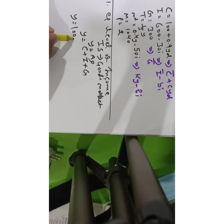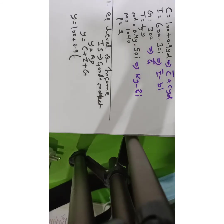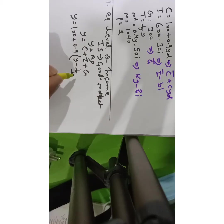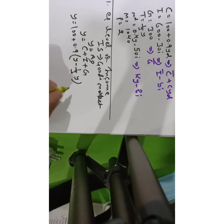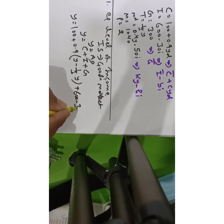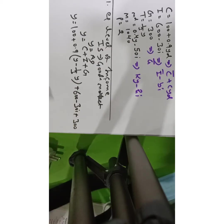Now we are going to use the information given to us. C is given as 100 plus 0.9 times Y_D, where Y_D stands for disposable income — that is, income minus taxes. There are no transfer payments here. I is given as 600 minus 30 times i, and G is given as 300. We now need to solve the whole thing in terms of income.